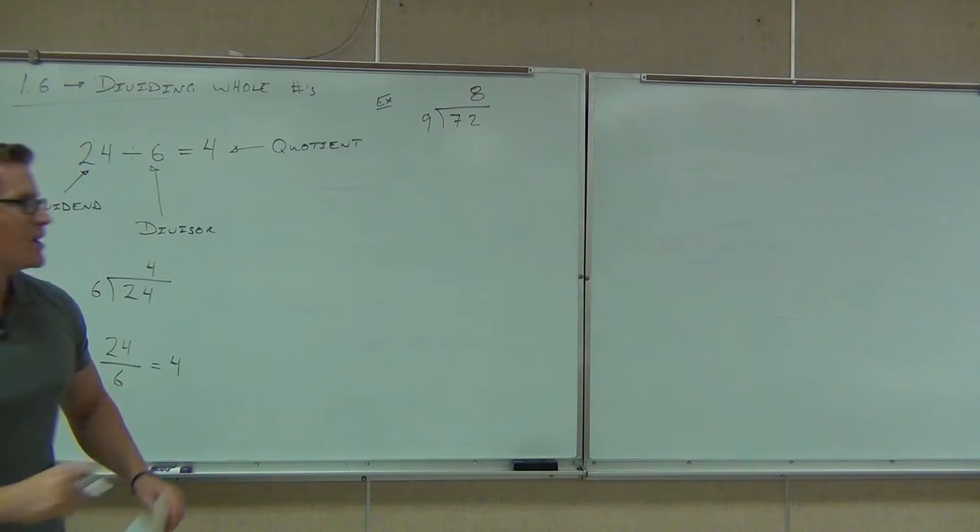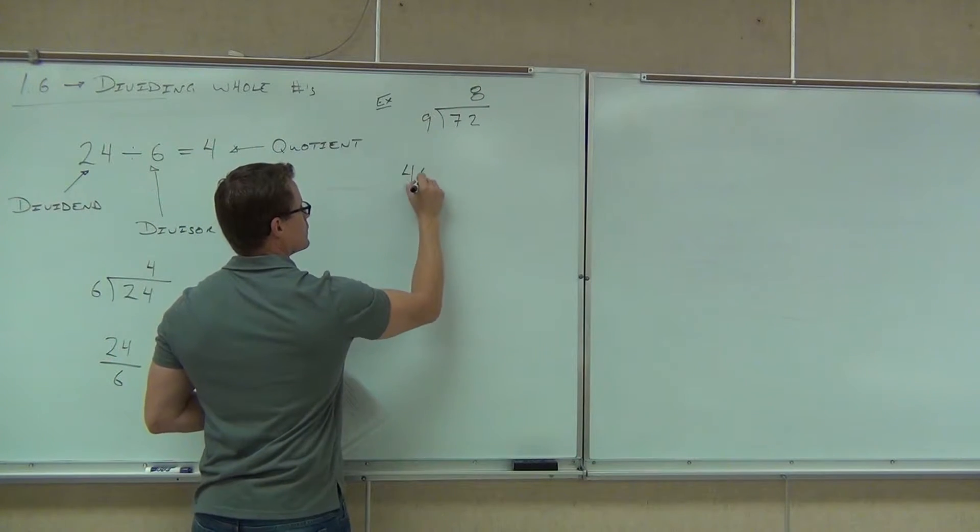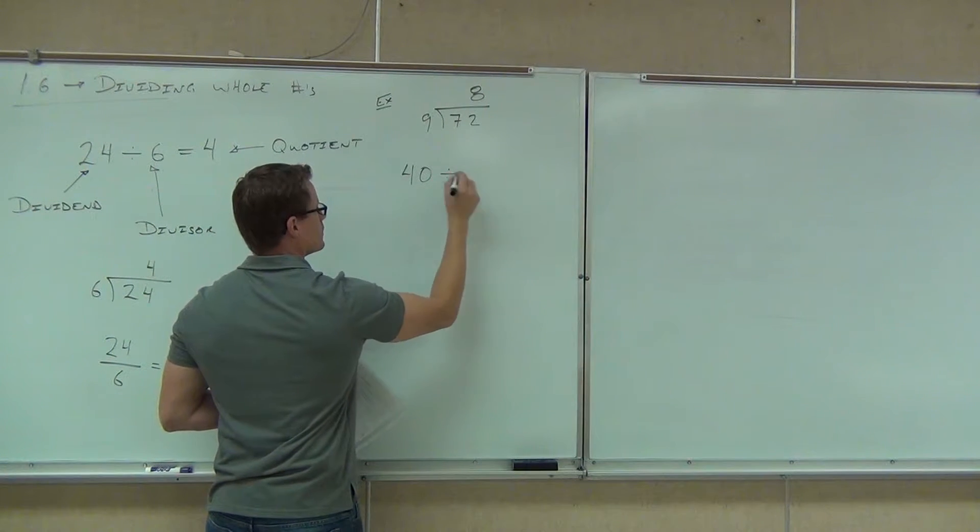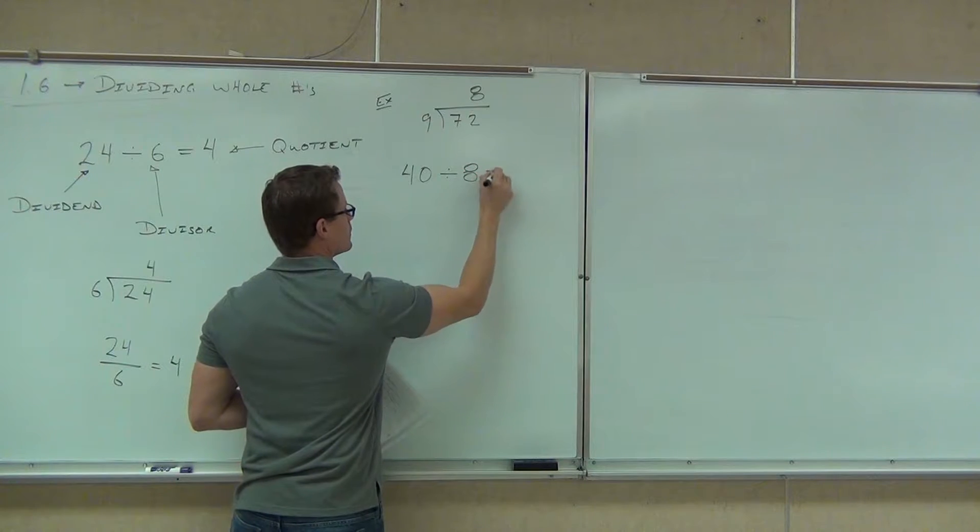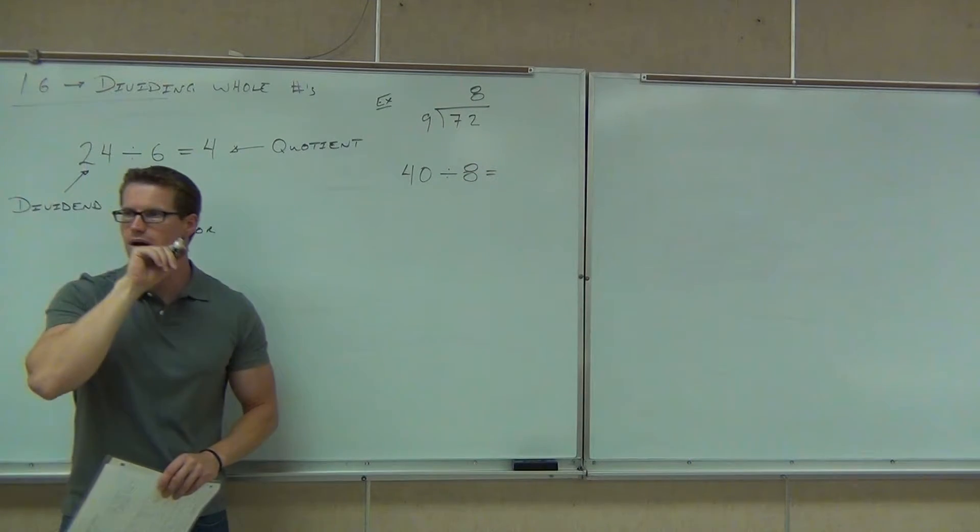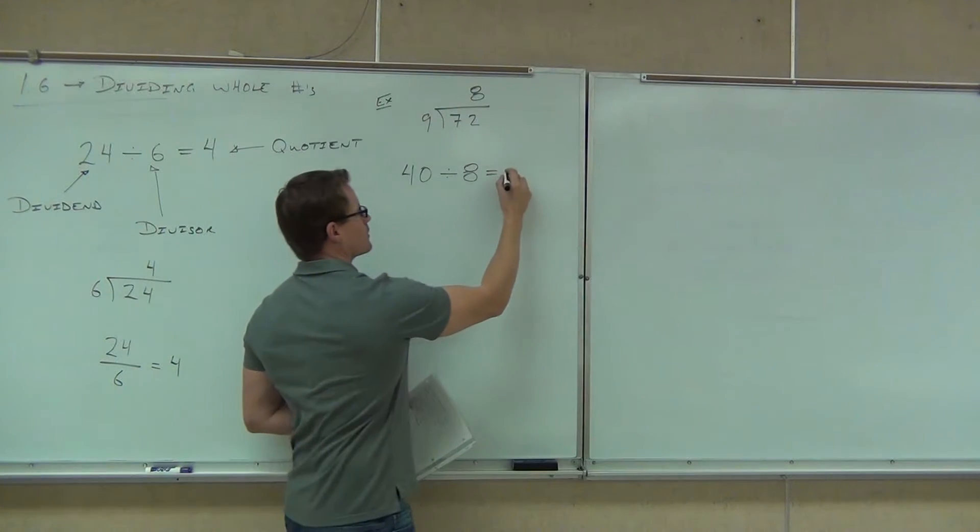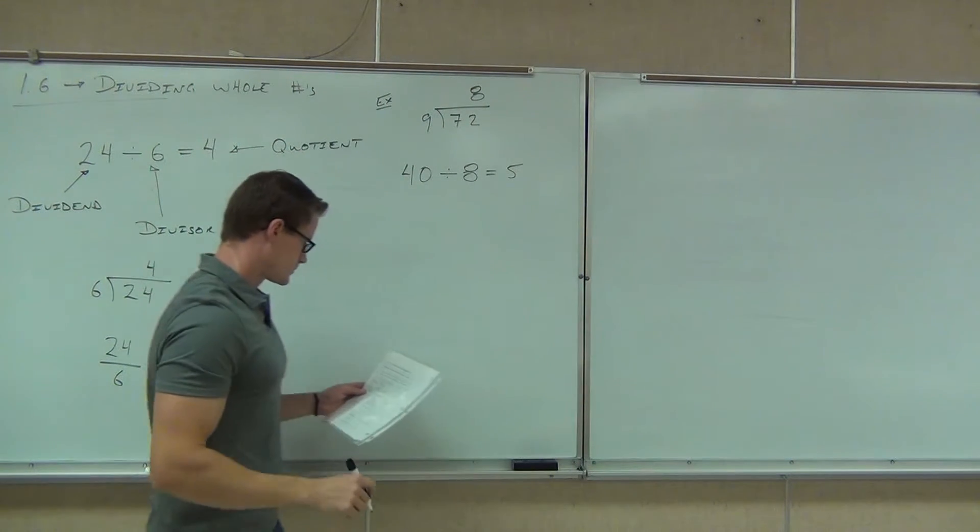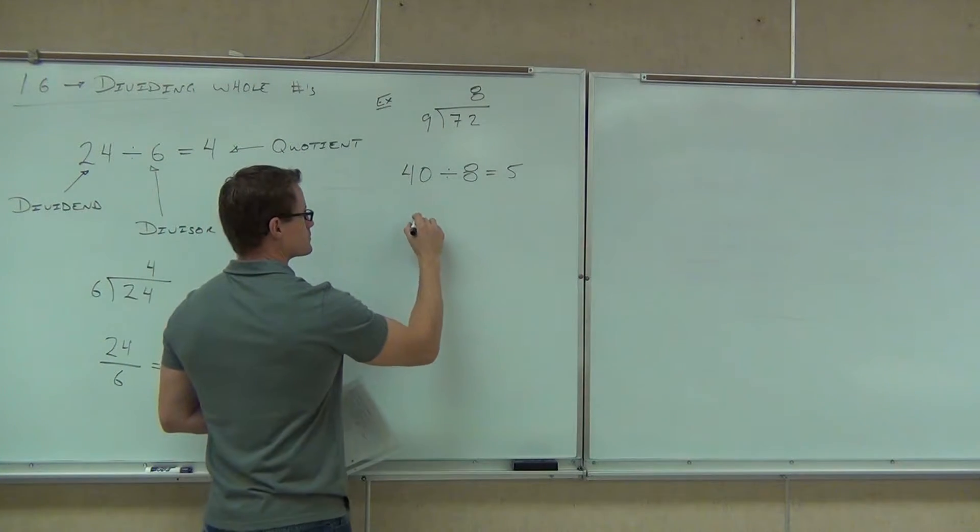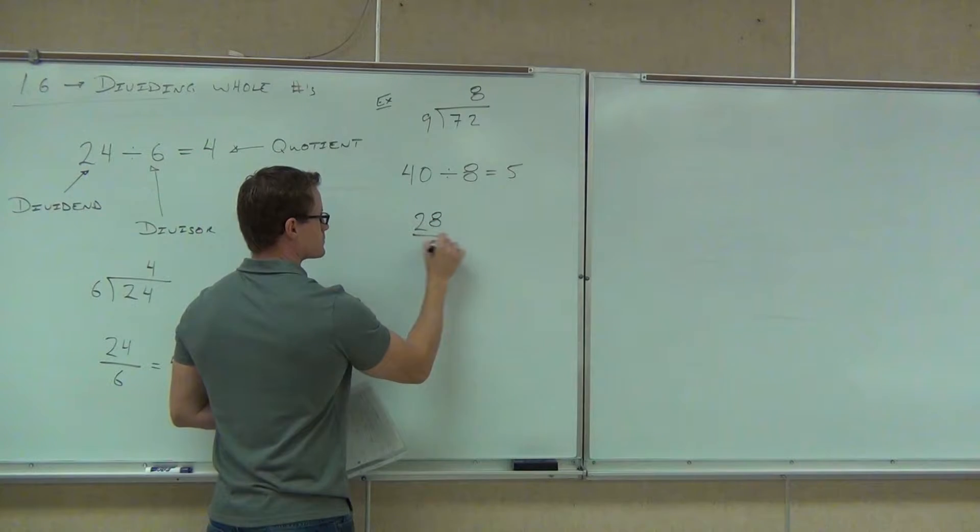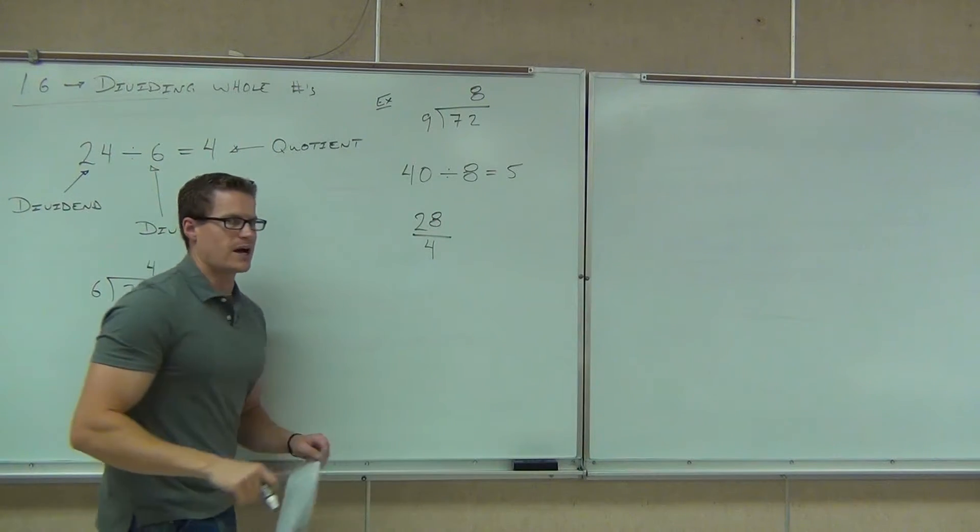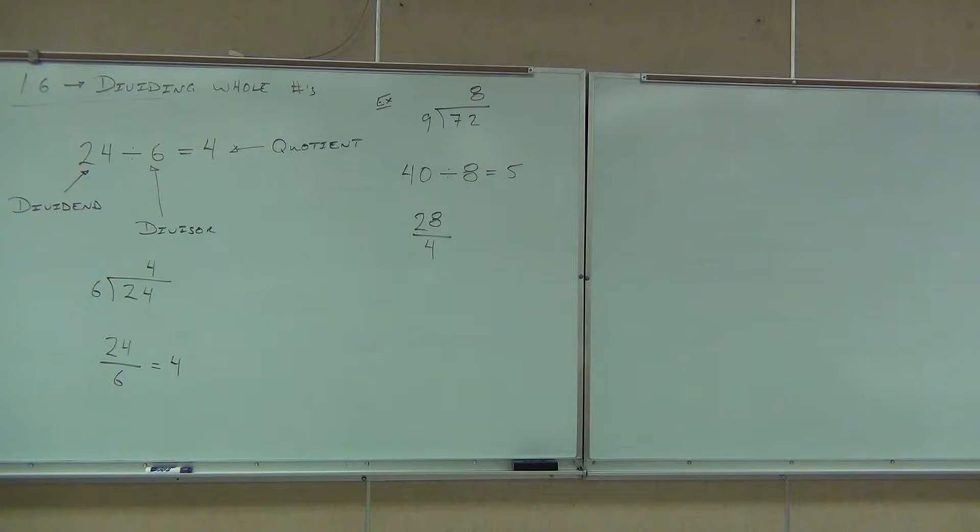Quotient goes on top. How about this one? What is my quotient in this division problem? Five. Perfect. Perfect. What's my divisor in this problem? Four. Four.